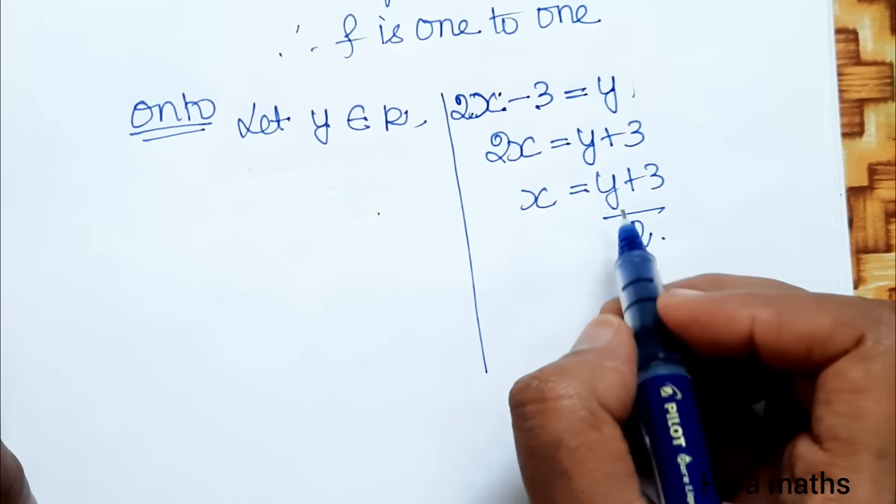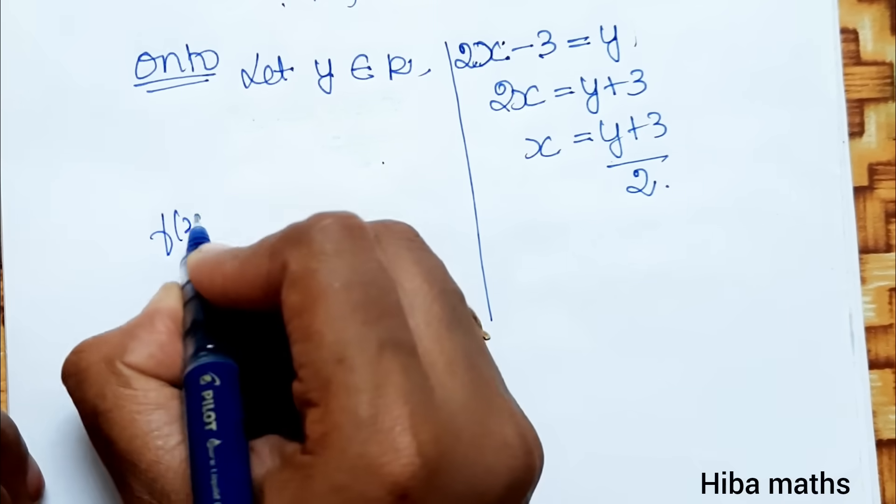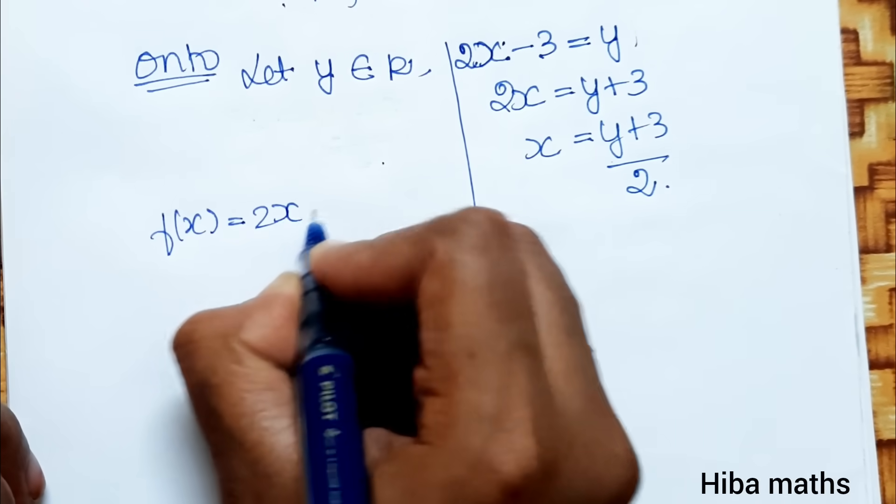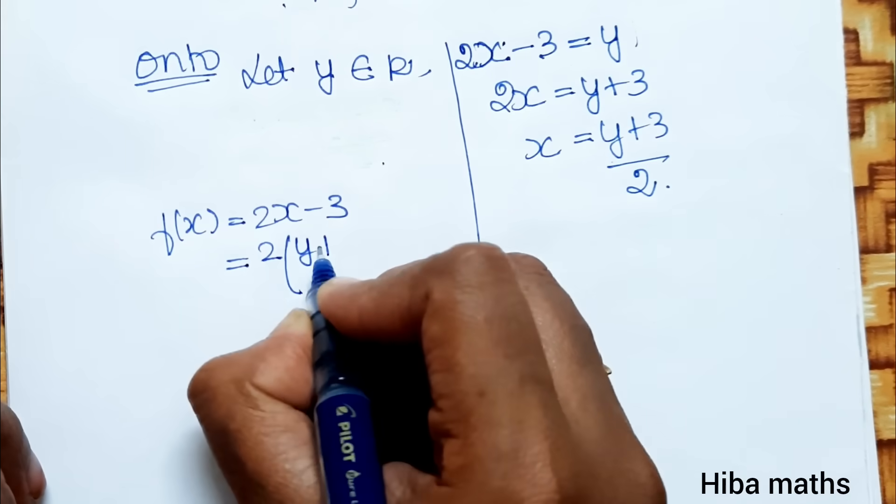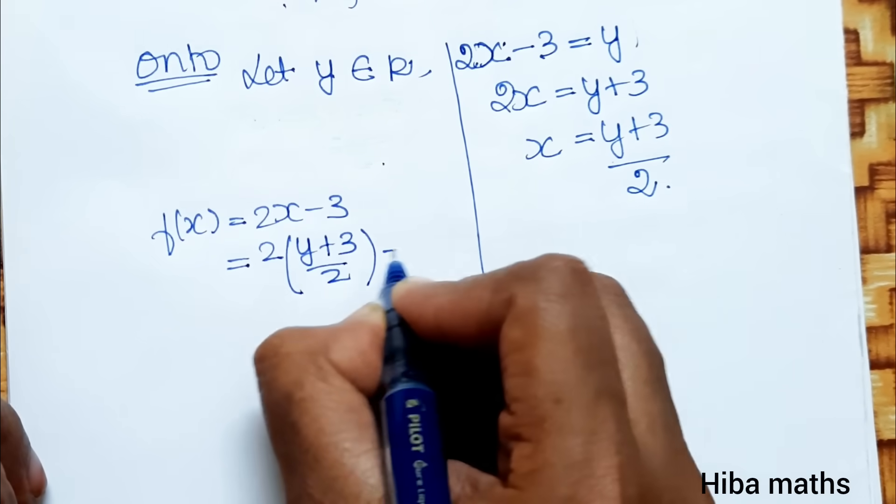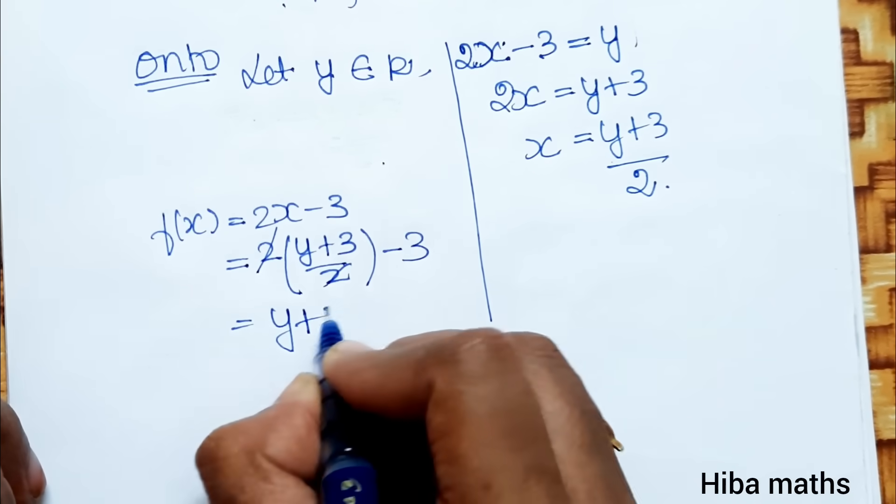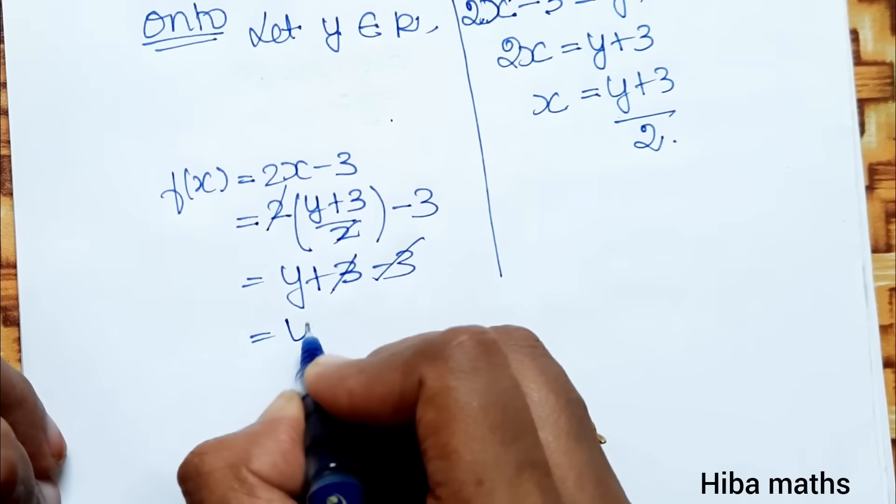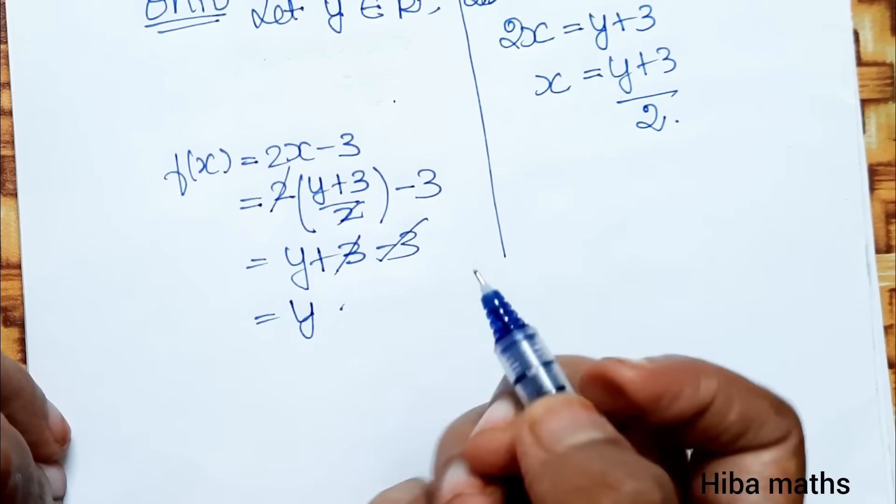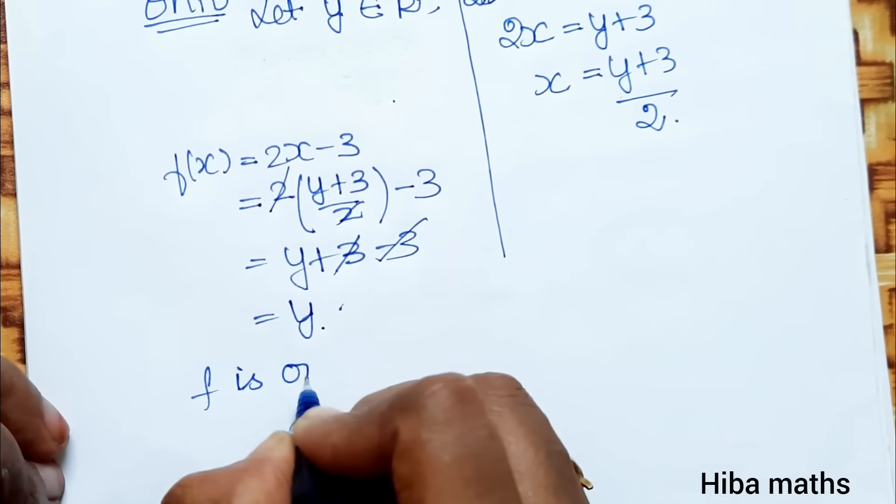Now for onto, let y ∈ R. Let x = (y+3)/2. Substitute: f(x) = 2x - 3 = 2((y+3)/2) - 3. 2 cancels. = y + 3 - 3. 3 cancels. = y. So f is onto.